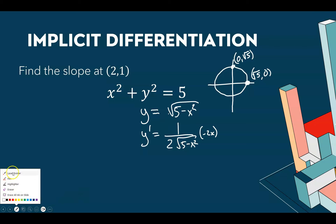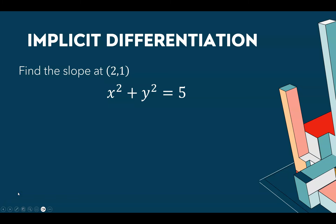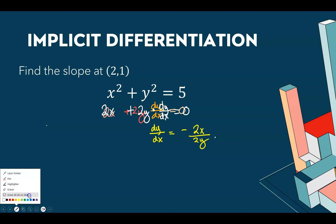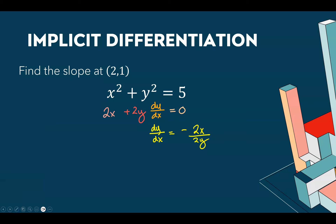With implicit differentiation it's pretty easy. We find the derivative of x² with respect to x, which is 2x. We find the derivative of y² with respect to x, which is 2y times the derivative of y with respect to x — we write dy/dx. The derivative of 5 is 0. From there we can substitute x = 2, y = 1: the twos divide out, and we get the slope at (2, 1) is negative 2 over 1, or −2.